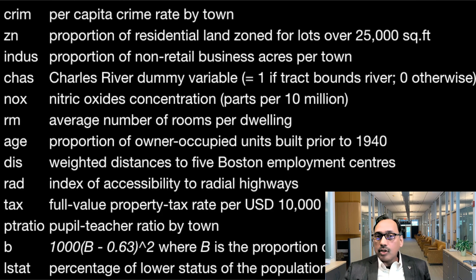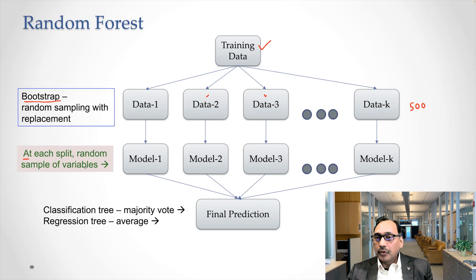With the Boston housing data, note that we have 13 independent variables. In the previous case, bagging case, we did not even talk about it, like how many variables we should include while creating our tree model. But what we are doing at random forest is when we are creating the model, we are not including all the variables, all the independent variables. We are not including all 13. We are taking a random sample of the variables.